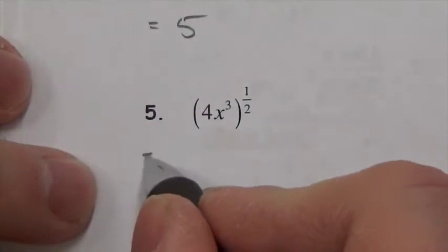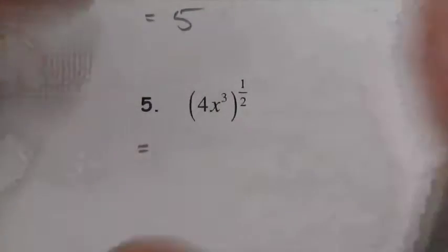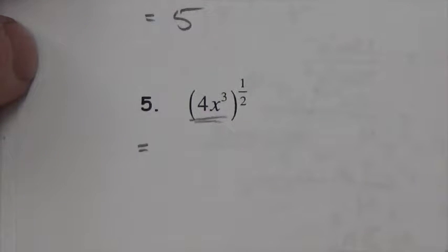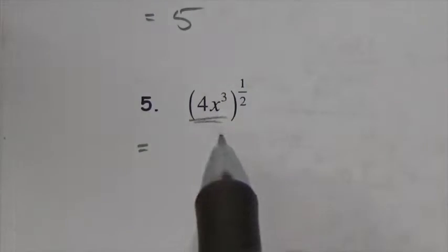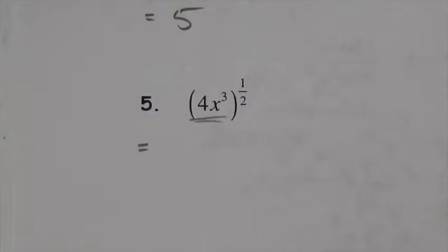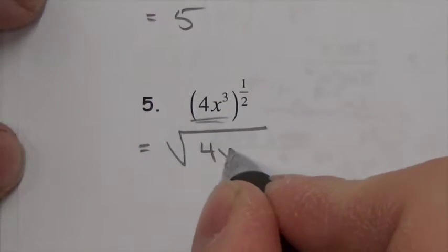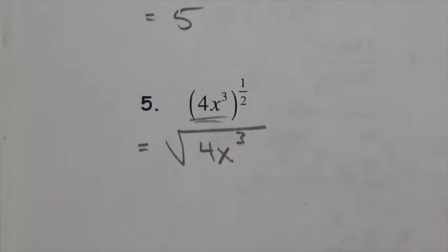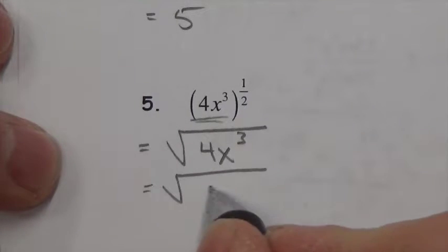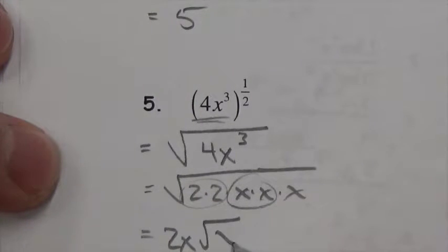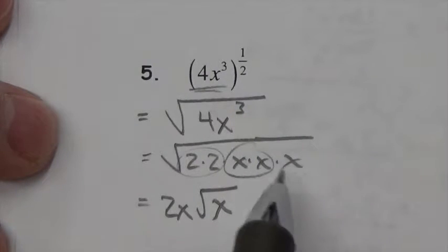For (4x cubed) to the 1 half: in this case, with the parentheses, the entire base is 4x cubed — there's no coefficient. This is the square root of 4x cubed. Simplifying: 4x cubed is 2 times 2 times x times x times x. Looking for pairs: a pair of 2s and a pair of xs come out, giving 2x. There's still one x left under the radical, so the answer is 2x times the square root of x.